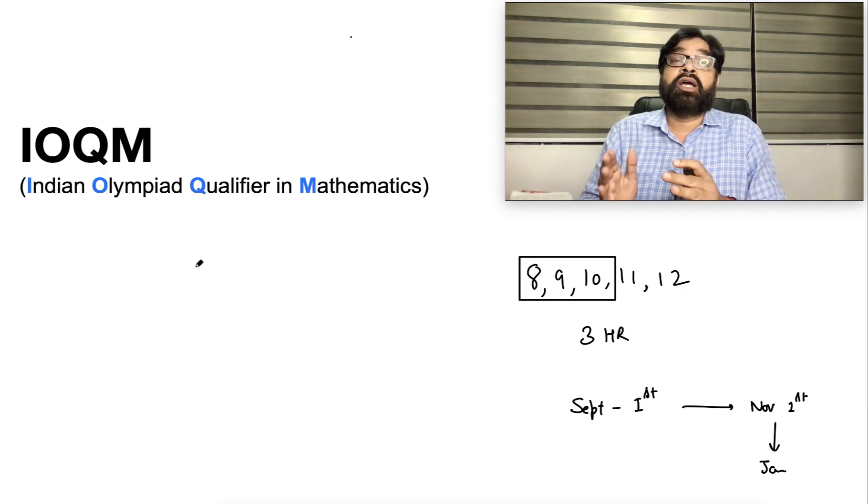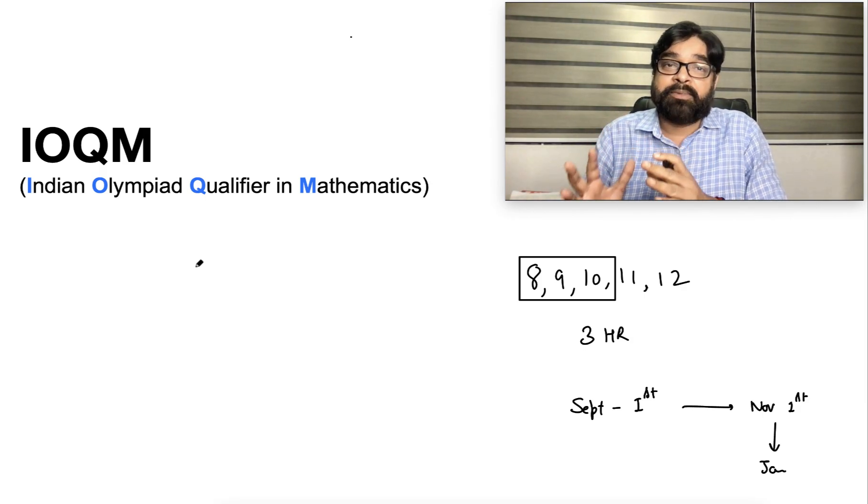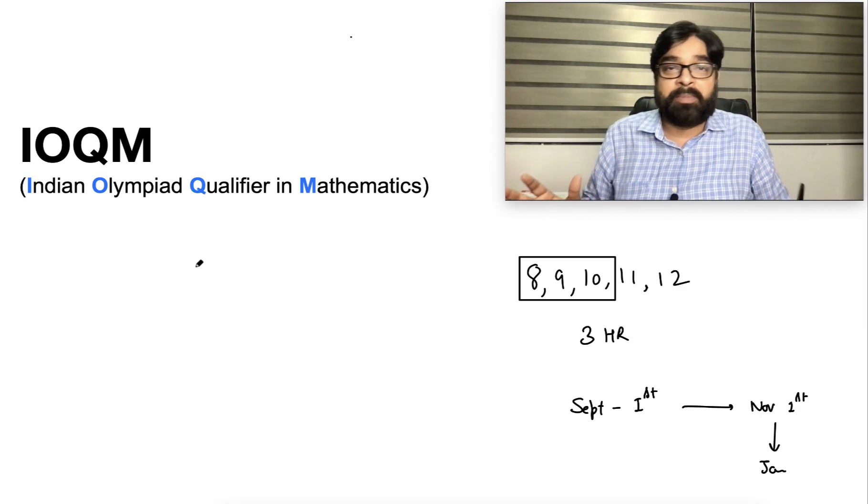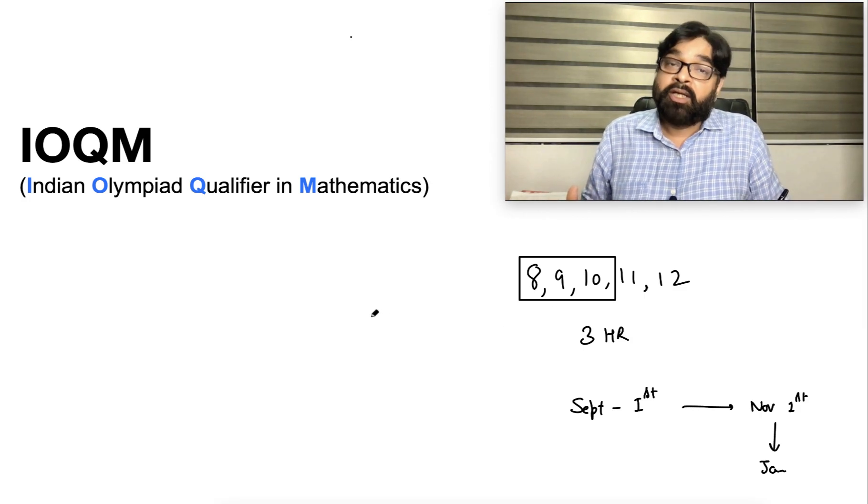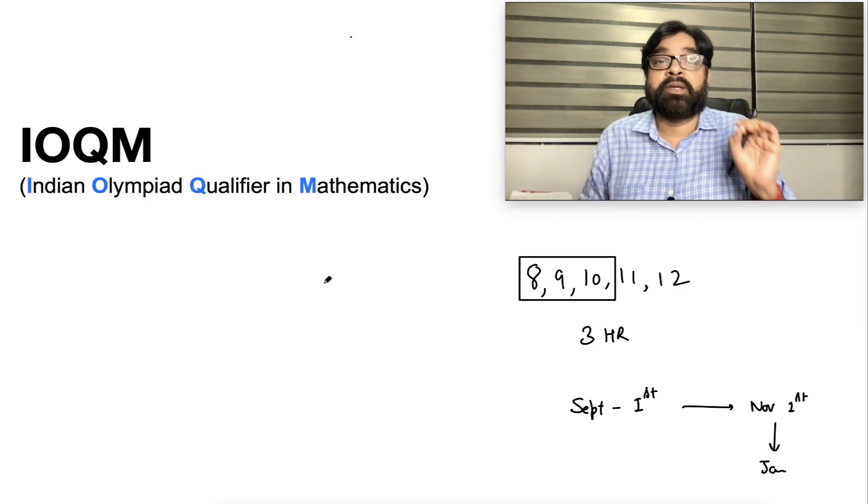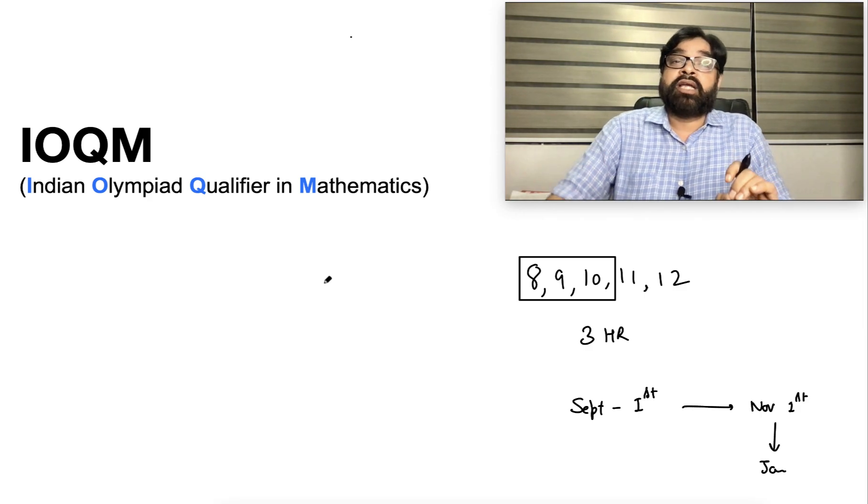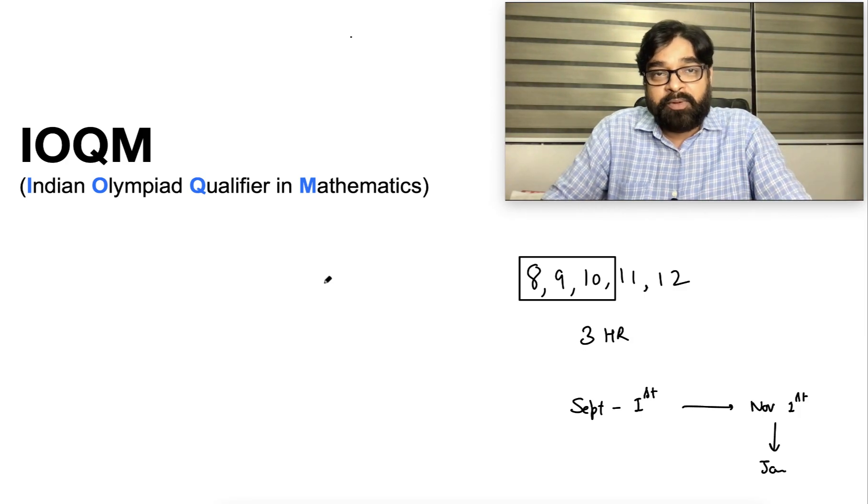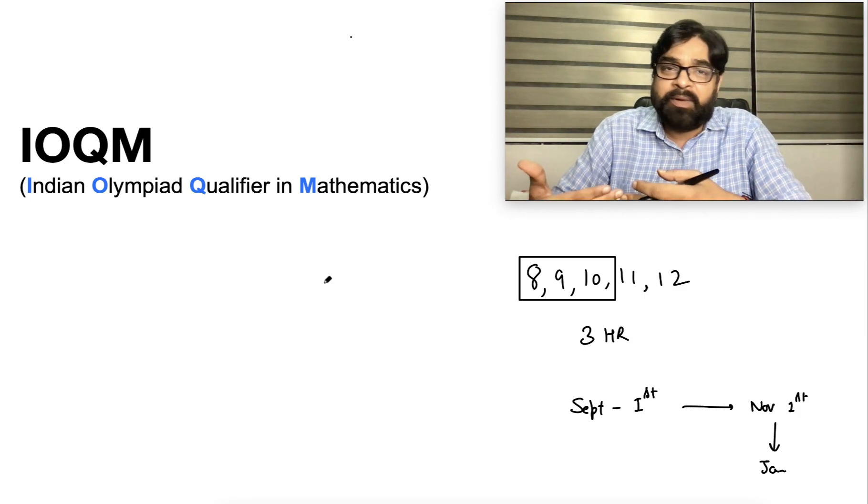Second, you should do the one, two prescribed book, that is the Holland Knight for algebra and pre-college mathematics for the geometry. These two book and your school book, if you do properly, your mathematics will become really strong. That you can use it either in your IOQM or in future, wherever, it never go waste.